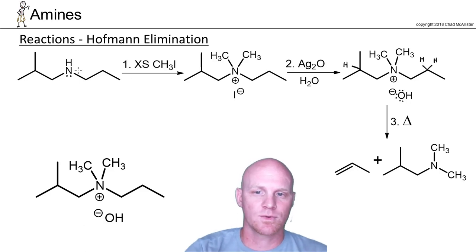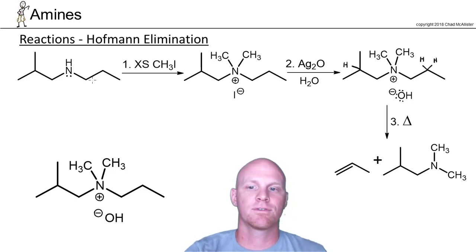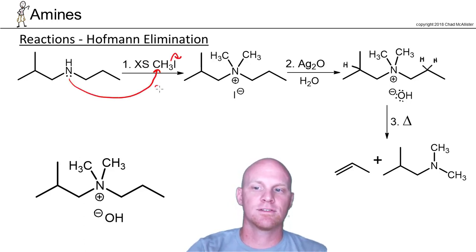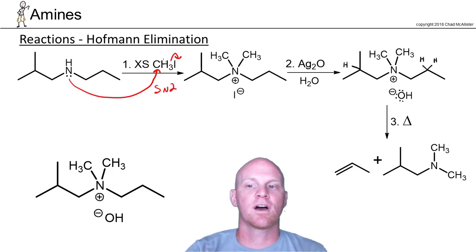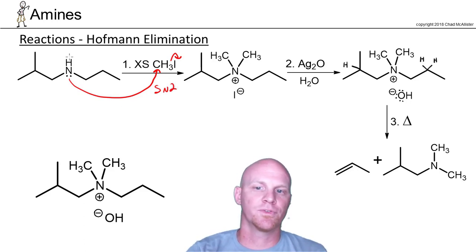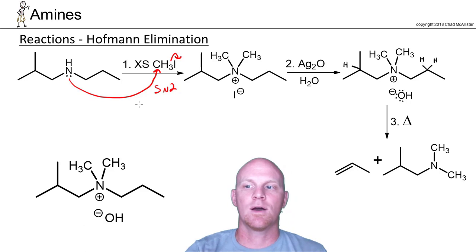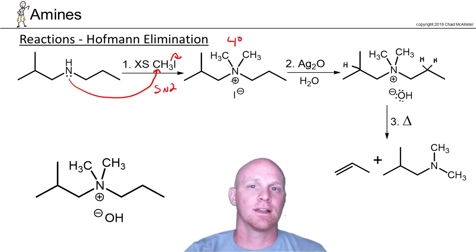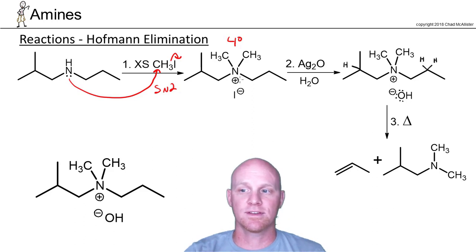If we look here, we're going to start with an amine, and the first thing we're going to do is add excess methyl iodide to exhaustively methylate. We're just doing straight-up SN2 here. So we'll come and attack, add a methyl group, deprotonate, and keep doing this until we have a quaternary ammonium ion, like we do in this case.